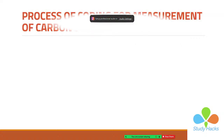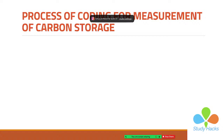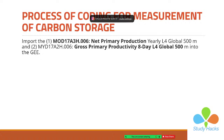Now let's look at the coding process for measurement of carbon storage. First, you need to import two MODIS products in your code editor: the first is Net Primary Production and the second is Gross Primary Production at the eight-day interval with 500-meter resolution. After importing the datasets, you need to select your ROI or region of interest — the area where you want to measure carbon storage. Then you filter your time period for the observation window.